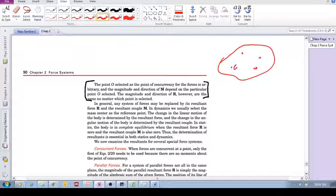It's up to you - any point could be your O. But as you change your point of concurrency, what changes? The magnitude and direction of M depend on the particular point selected. What do we mean by that?